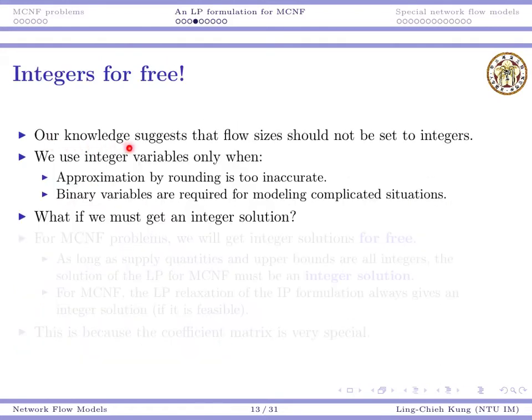So our knowledge suggests that the flow size should not be set to integers. If you still have those memories, we set xij to be non-negative, and we did not say that xij must be integers. We did not say this. Why? If we do so, in general, the problem becomes an integer program, and we need to use something like branch and bound to solve that problem. Even one integer variable will greatly complicate the whole solution process.